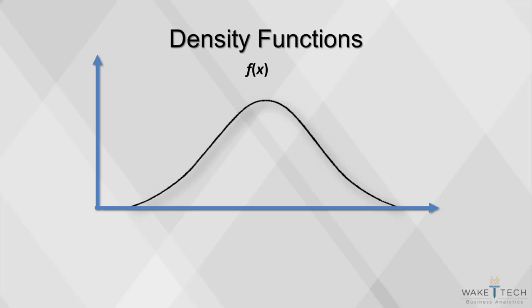A density function, usually denoted by f(x), specifies the probability distribution of a continuous random variable x. The higher f(x) is, the more likely x is.